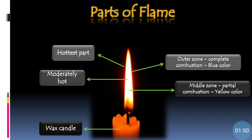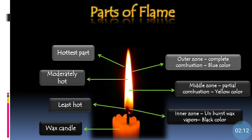The second part of a flame is known as the middle zone. It is formed due to the partial combustion of the fuel. It will be yellow in color and it is the moderately hot part of the flame. The third part of the flame is the inner zone, which is formed due to the unburnt vapors of the fuel. It will be black in color and it is the least hot part of the flame.